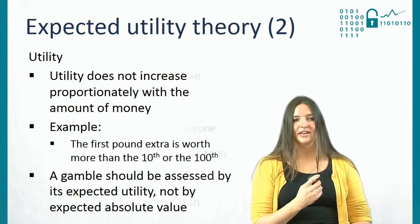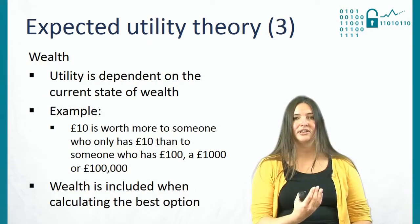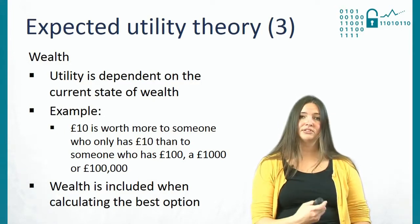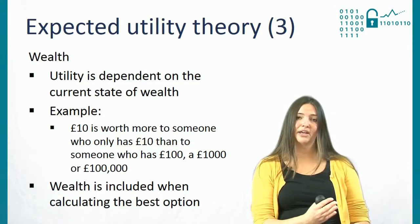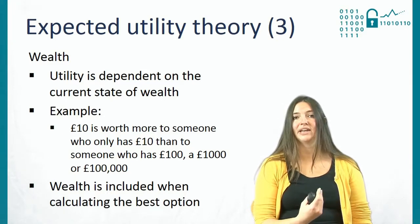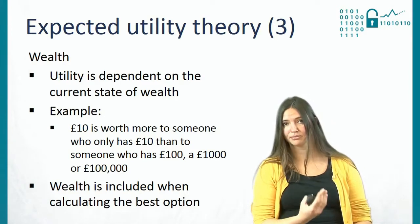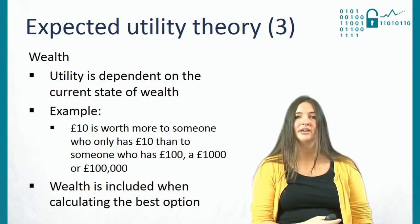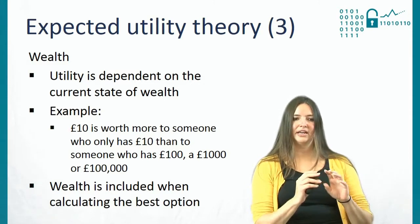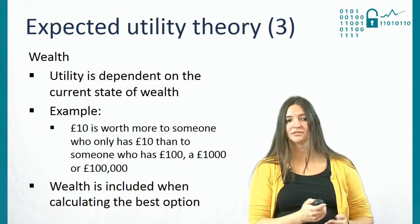The second concept is wealth, because what the utility of something is depends on what you have to start off with. For example, having the chance to win 10 pounds means something very differently for someone who only has 10 pounds than for someone who has 100, 1,000, or maybe 100,000 pounds to start off with. Therefore, wealth — your current state — is included in the analysis when you're trying to calculate what the best option is.